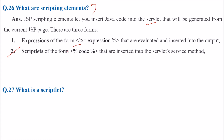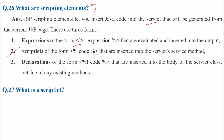Scriptlets have the form: angle-bracket percent code percent angle-bracket, and they are inserted into the servlet service method. Declarations have the form with an exclamation mark, and these are inserted into the body of the servlet class outside of any existing methods.